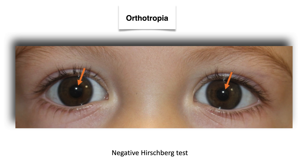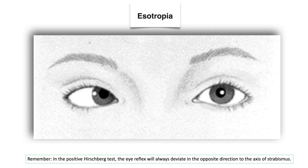The deviating eye is the one that will have the reflection at some other point. If the reflex tends to go towards the outside of the eye, it is because the eye is deviating inwards; therefore, we will have an esotropia. It is important to remember that in a positive Hirschberg test, the eye reflex will always deviate in the opposite direction to the axis of strabismus.